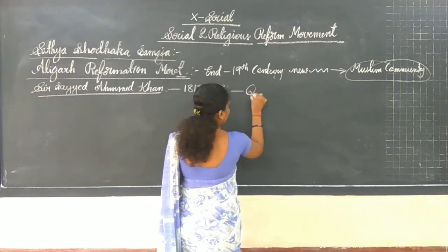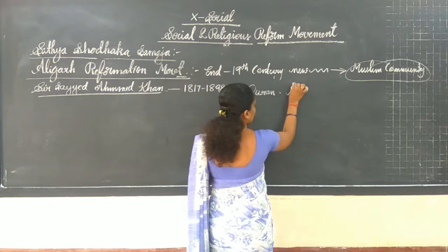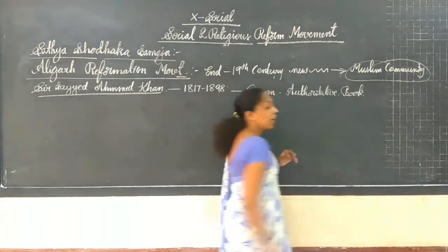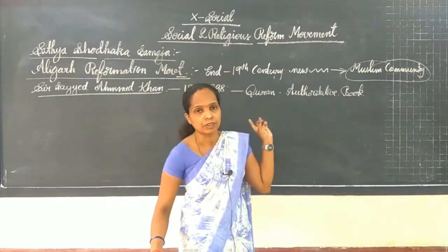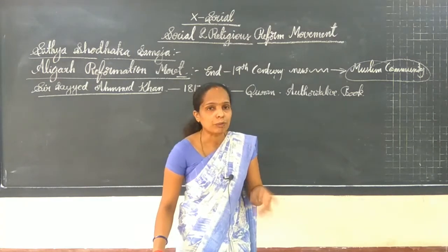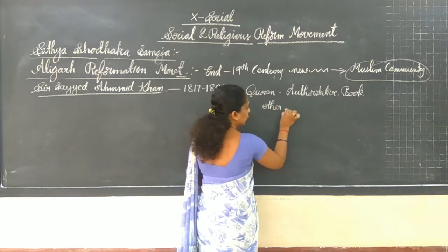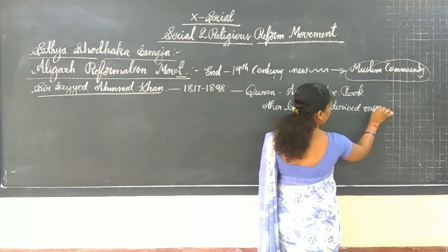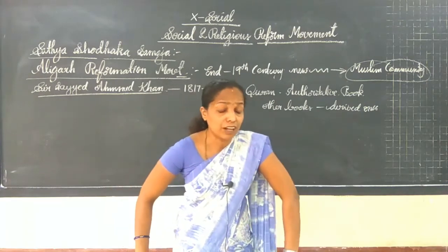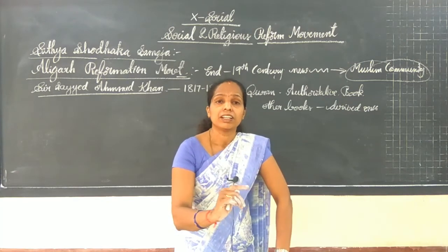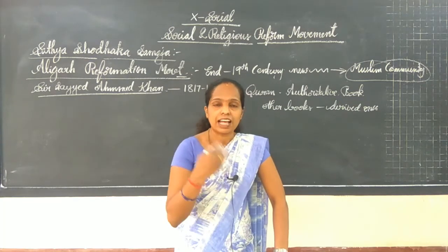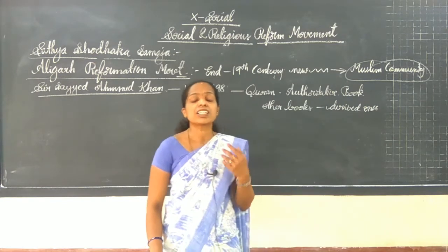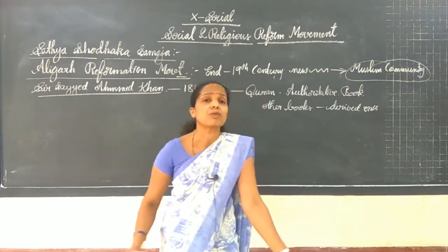The Quran is one of the authoritative books in Islam. About other books on Islam - many other books are in Islam, but those books are derived ones. It was stated by Sir Syed Ahmad Khan. And along with that, he said that religion has to be interpreted according to the changing times. Whenever the times change, religion should be interpreted accordingly, or else the religion will become sluggish.